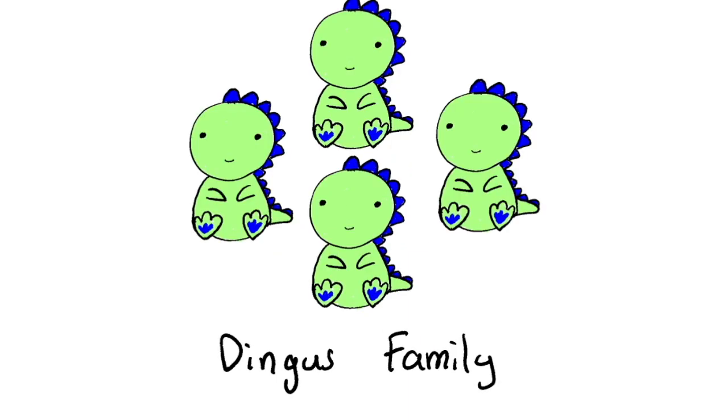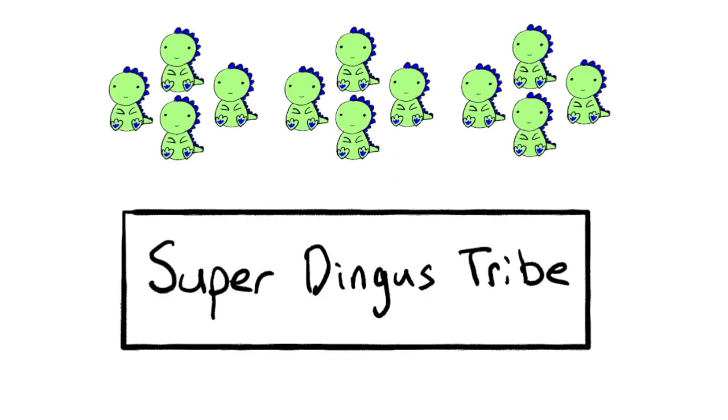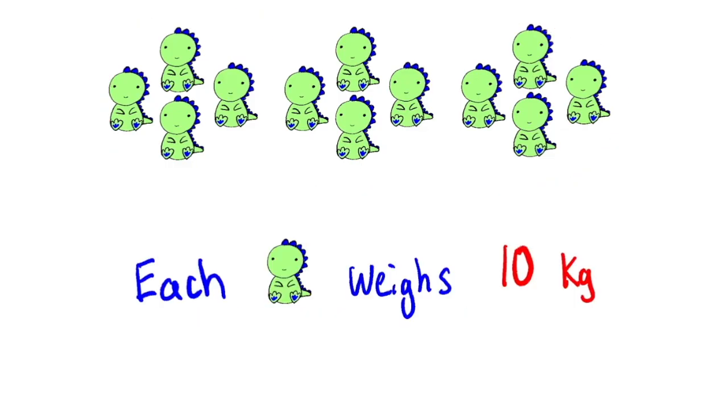Dino Dingus and his Dingus family teamed up with two other dinosaur families to create the Super Dingus tribe of 12 total dinosaurs. The dinosaurs that are truly part of the Dingus clan each weigh 10 kilograms.